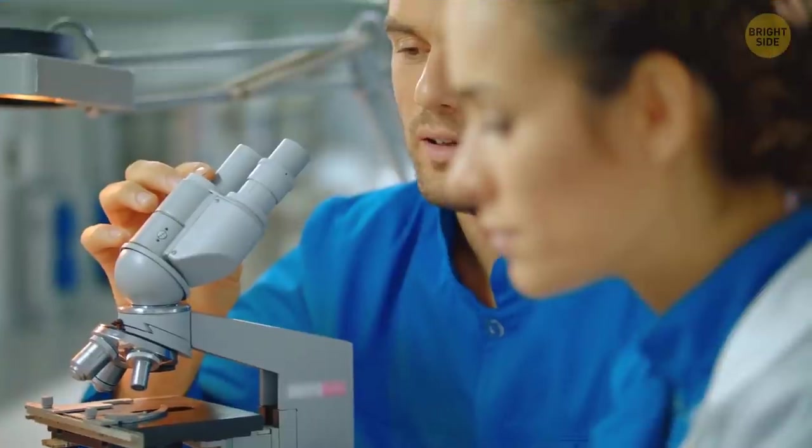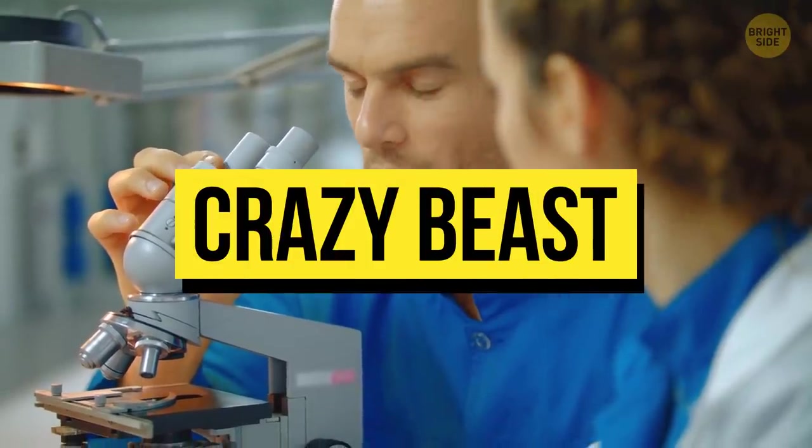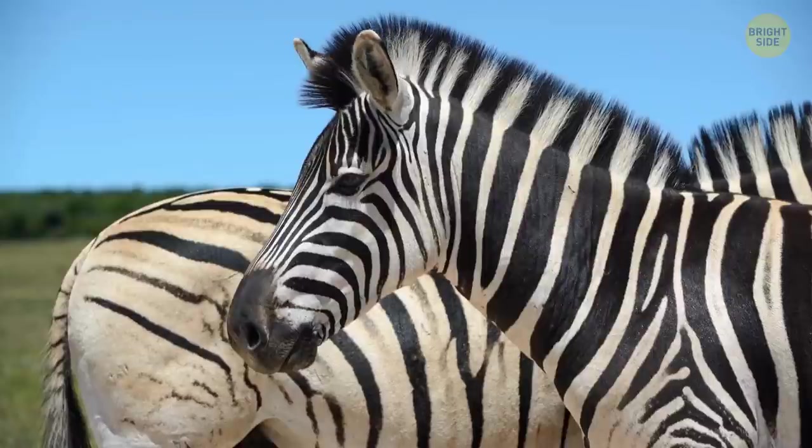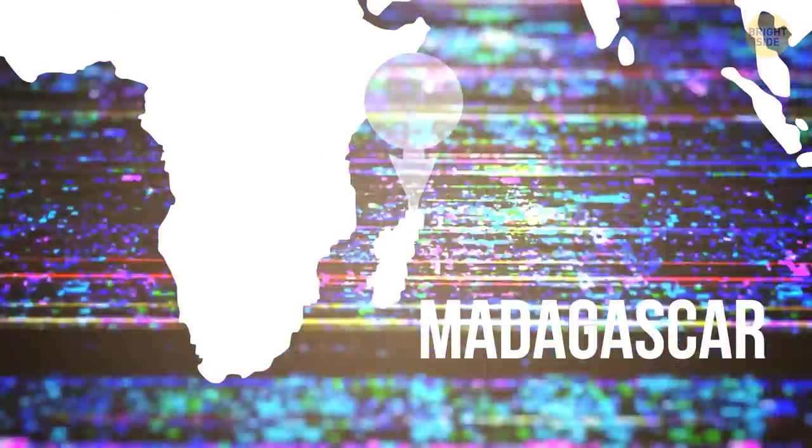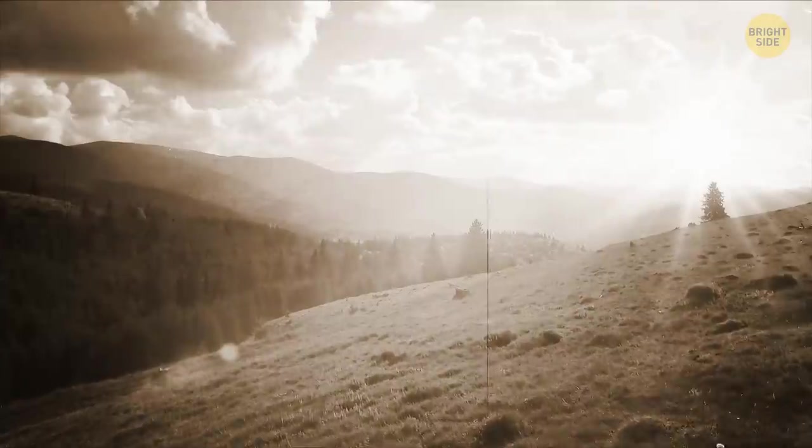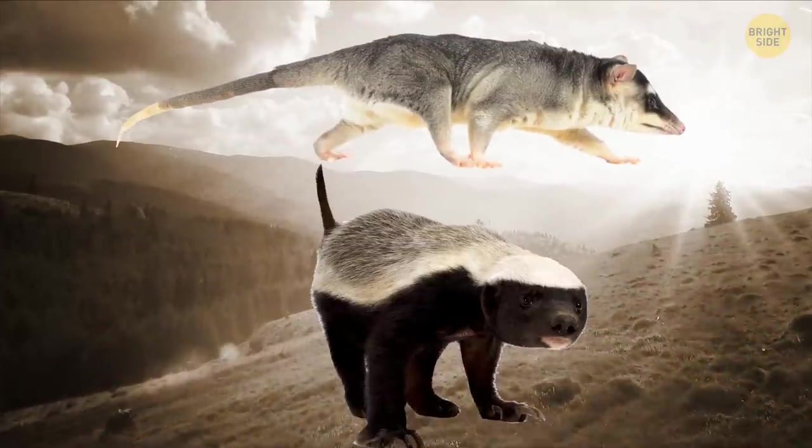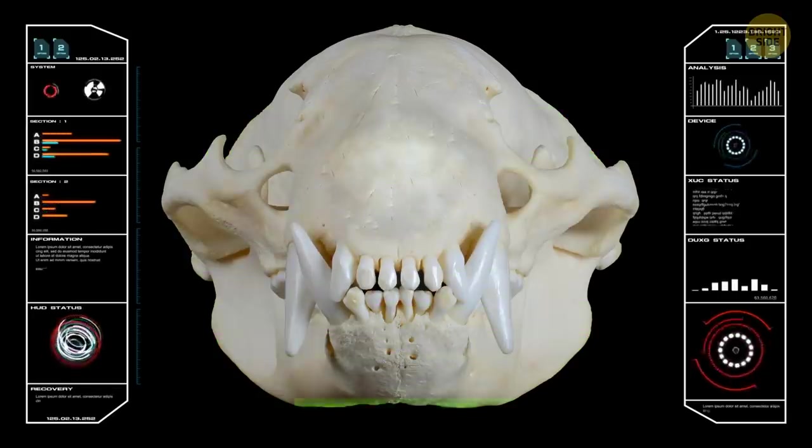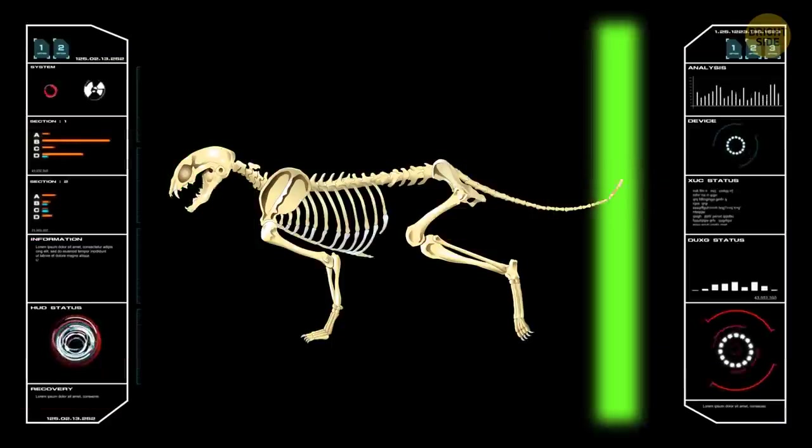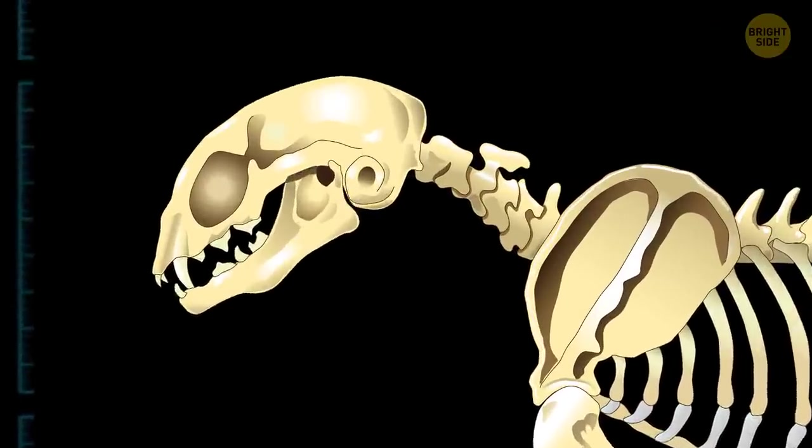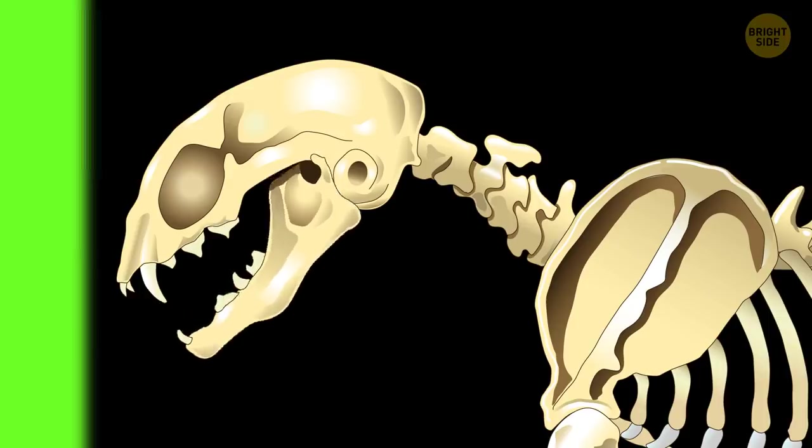The researchers called it a crazy beast, and it isn't like any other animal that we know of. It lived on the island of Madagascar about 66 million years ago and looked like a bit of an opossum or badger. It has more holes in its snout than any known animal, which means the animal probably had an overly sensitive muzzle and whiskers. The crazy critter's teeth are unique, with a structure unlike any other animal.